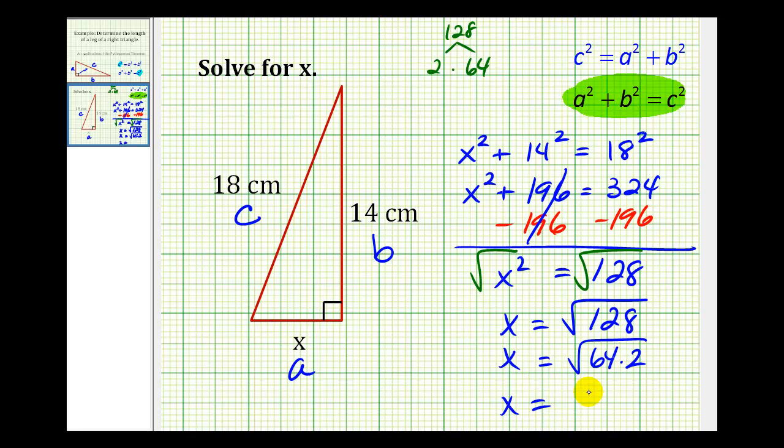The square root of 64 would be 8. So x equals 8√2 centimeters.